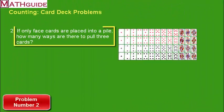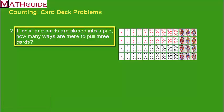Here's our second problem. If we only were to place face cards in a pile, from those cards, how many ways can we pull 3?